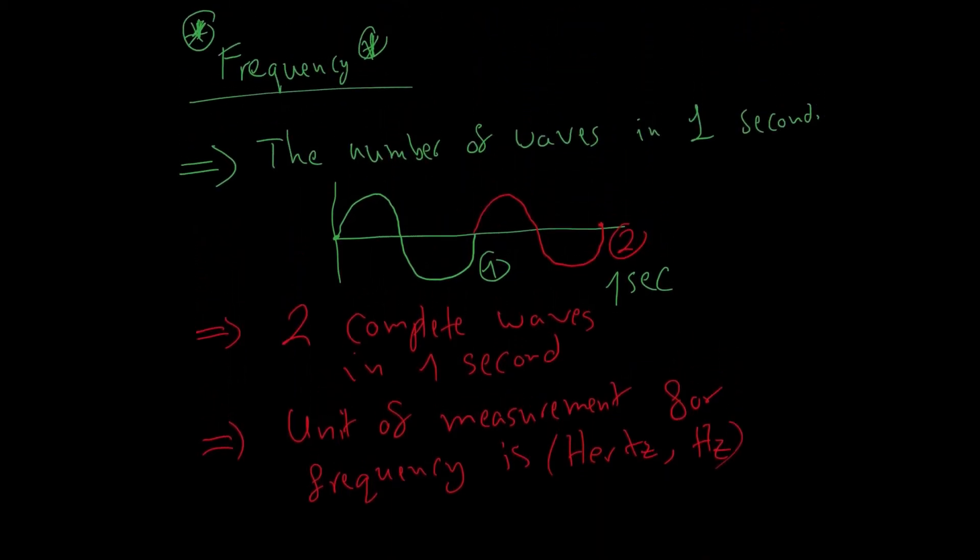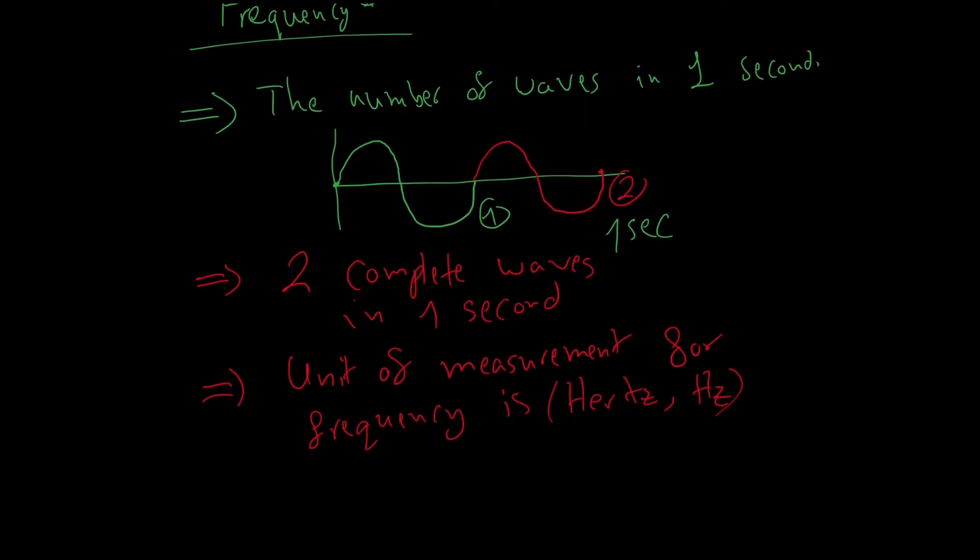Frequency is the number of complete waves in exactly one second and in this current picture we have two complete waves happening in one second. So, for this current wave, the frequency is, given the letter small f, is two hertz. So, when we say a frequency of two hertz, it means in every single second, I have two waves passing by. This is wave number one. This is wave number two.